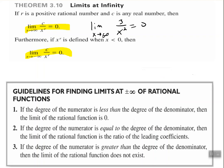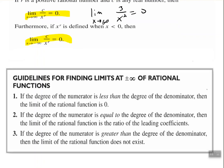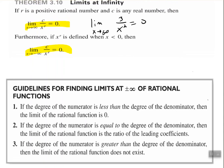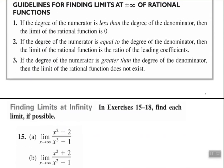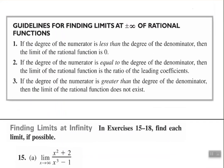Make sure you write those down. I recommend that you pause the video and write down this theorem and the guidelines for finding limits at positive and negative infinity of rational functions. If the degree of the numerator is less than the degree of the denominator, then the limit is 0. If the degree of the numerator is equal to the degree of the denominator, then the limit is the ratio of the leading coefficients. And if the degree of the numerator is greater than the degree of the denominator, then the limit does not exist — it approaches either positive or negative infinity. This is basically the same thing as horizontal asymptotes.